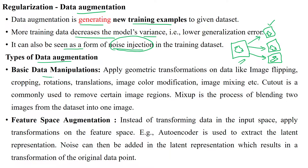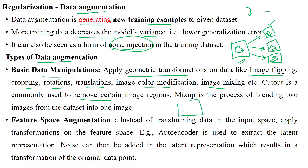There are different types of augmentation. One is data manipulation, where we apply geometric transformations like image flipping — vertical or horizontal — rotation, cropping, translations, color modification, and image mixing. Cutout is commonly used to remove a certain portion of the image — for example, removing one object from an image that contains two objects. Mixup is the process of blending two images from the dataset into a single image.